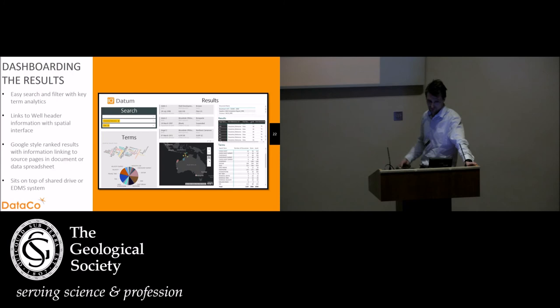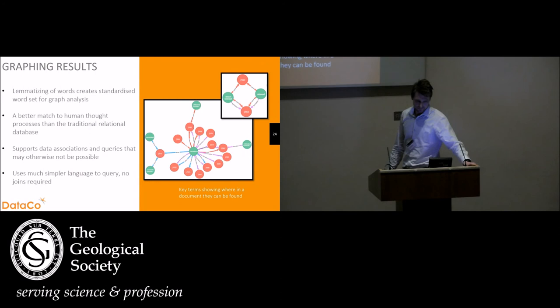Going on to the next step, we were able to create relationships between data types, keywords that we found within those data types, and the pages themselves. So by lemmatizing words, basically putting them into a standardized dataset, we were able to put them into a graph database. Graph databases are a much better match to the way a human might look at relationships. Rather than having tables and joins, we have nodes and connections.